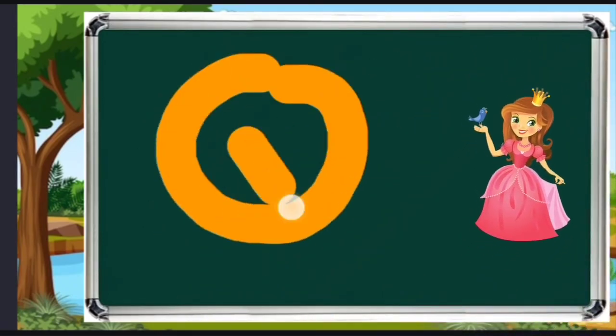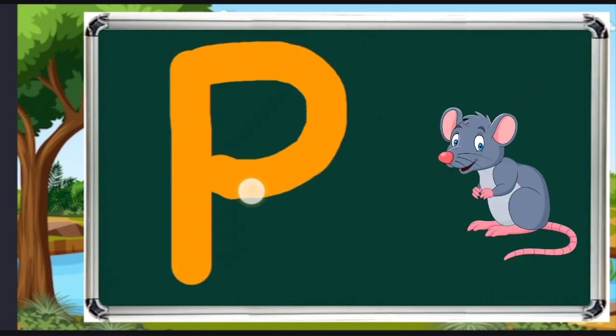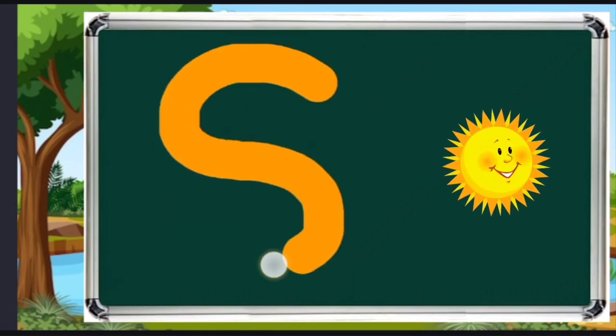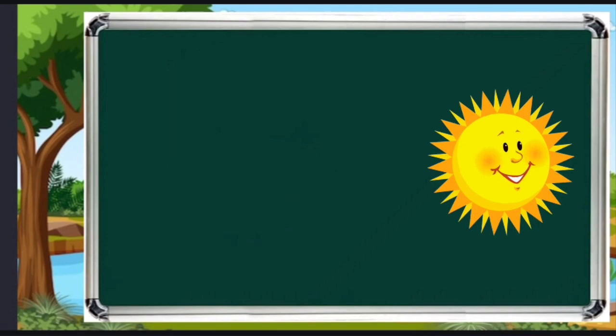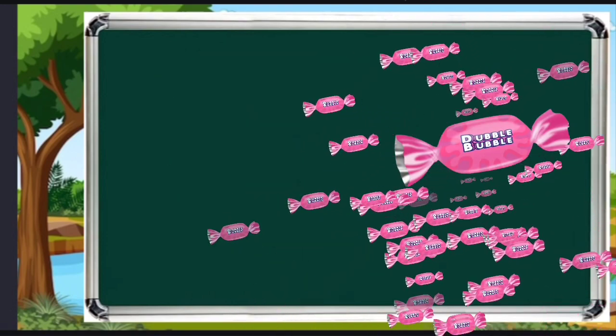Q for queen, R for red, S for sun, T for toffee.